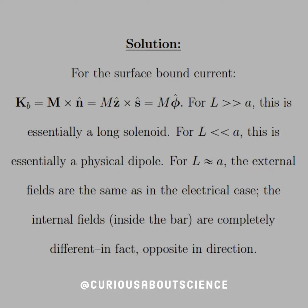So if L is much greater than A, this is essentially a long solenoid. For L less than A, this is essentially a physical dipole. And for L approximately equal to A, the external fields are the same as the electrical case. The internal fields inside the bar are completely different, in fact, opposite in direction. Let's sketch them out.